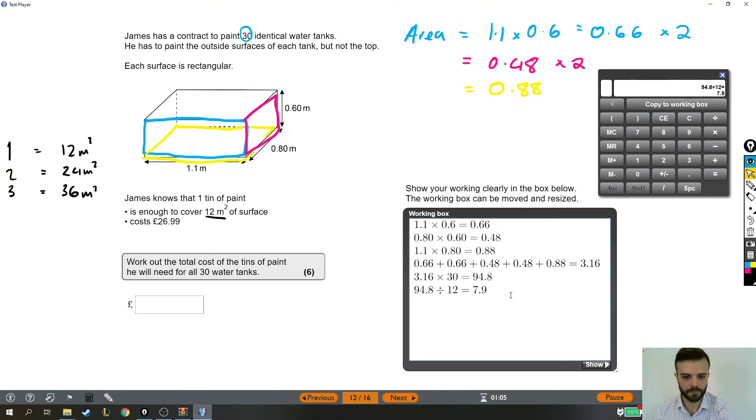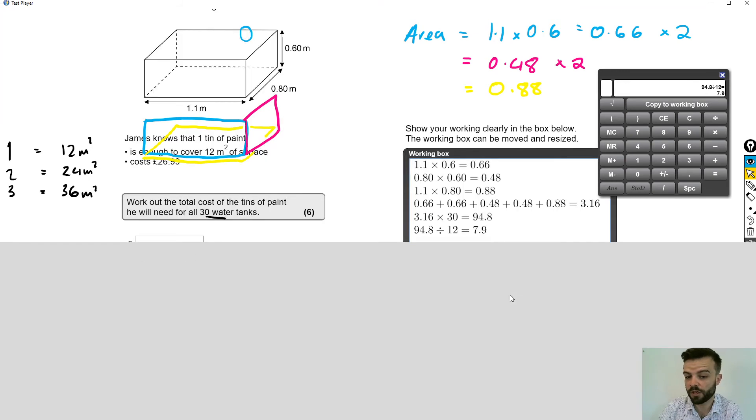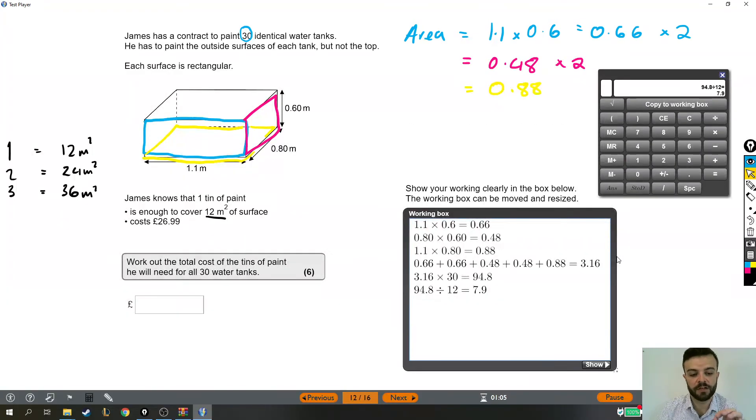Just by the way, while we're talking, even if that answer had been like 7.1, you would still need eight tins. Even though 7.1 rounds down to seven, you still need eight tins because you can't have not enough - you've got to have too much when you're talking about painting and having enough paint to cover these water tanks.